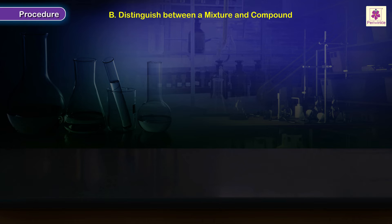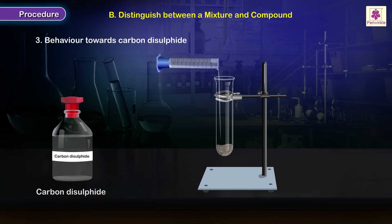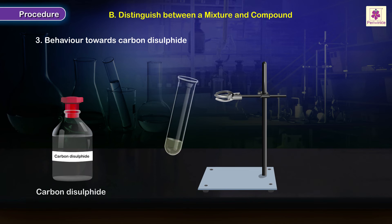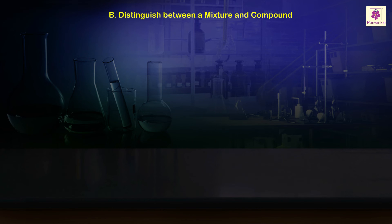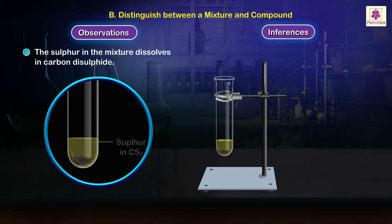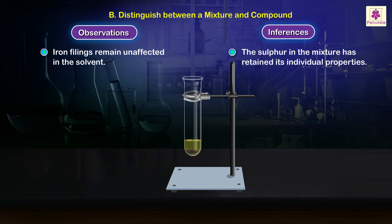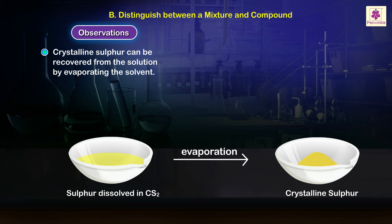Procedure to distinguish between a mixture and compound on the basis of behavior towards carbon disulfide: take a small quantity of Sample A in a clean dry test tube. Add about 1 to 2 milliliters of carbon disulfide to the test tube and shake it well. Observation: the sulfur in the mixture dissolves in carbon disulfide while iron filings remain unaffected. The sulfur has retained its individual properties. Crystalline sulfur can be recovered from the solution by evaporating the solvent.